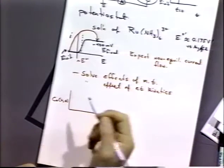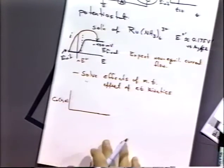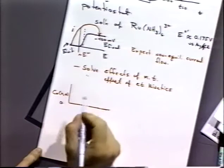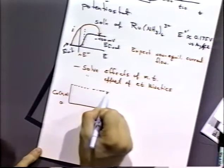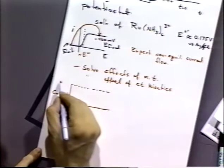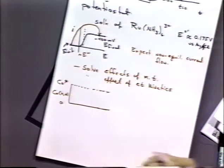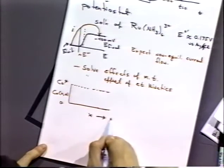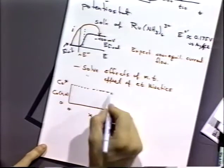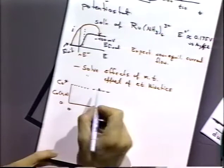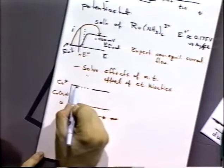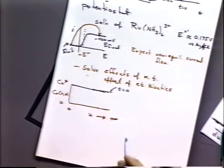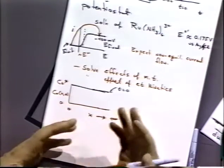In general, we're going to get a concentration profile with a certain form. If we plot the concentration of O — in this example, Ruhex — at position X and time T, it goes between two extreme points: zero concentration and the bulk concentration. At X going to infinity the concentration equals the bulk, and at time equals zero the concentration is uniform throughout the system since we haven't perturbed it yet.